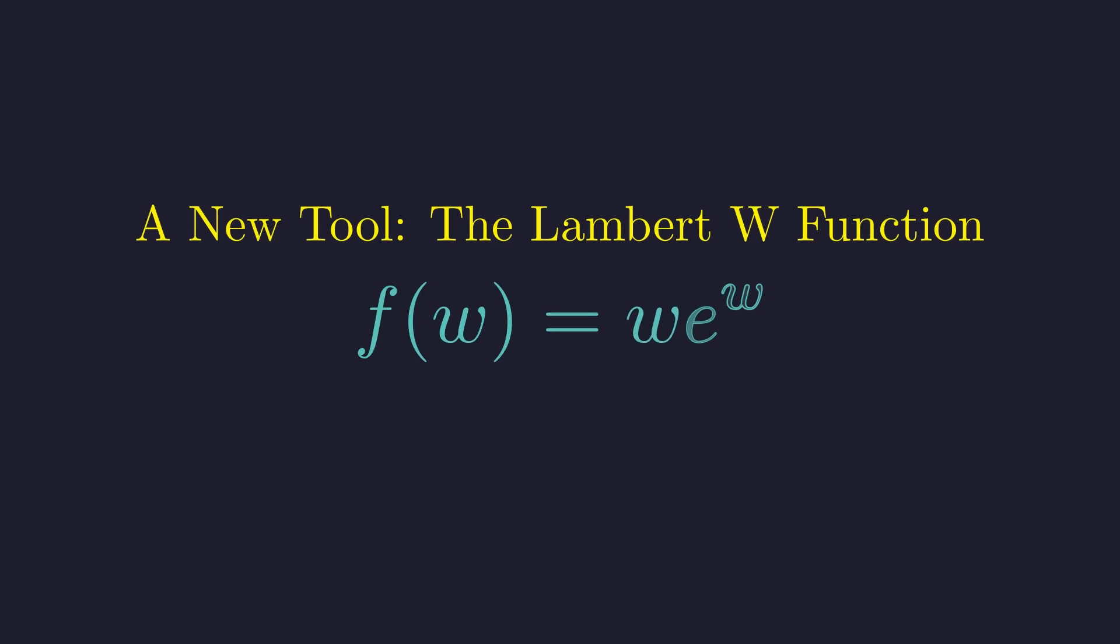The Lambert W function is defined as the inverse of a simpler function: f of W equals W times E to the W. Notice this function has the same structural problem as our equation. The variable W appears both as a base and inside an exponent.